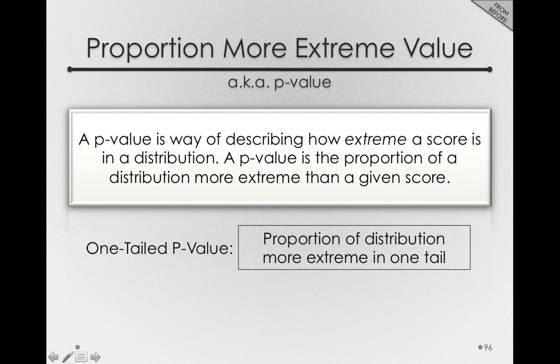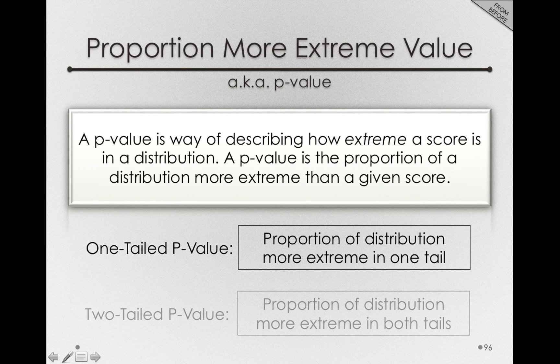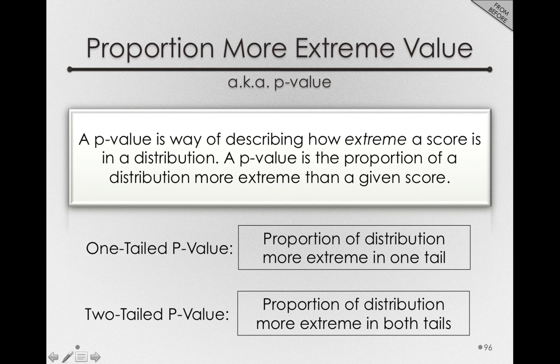We had two varieties: the one-tailed p-value, the proportion more extreme in one tail, and the two-tailed p-value, the proportion of a distribution more extreme in both tails.